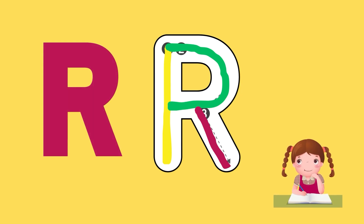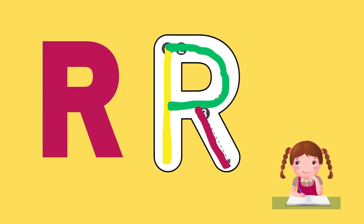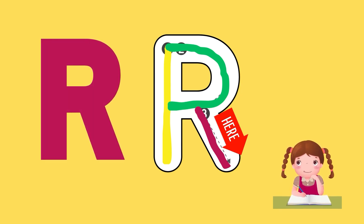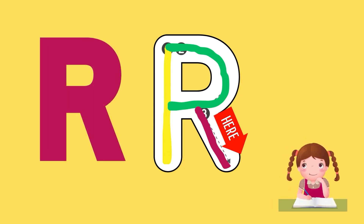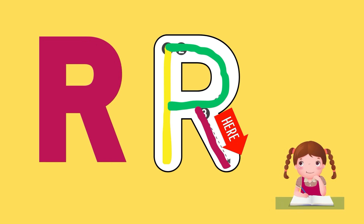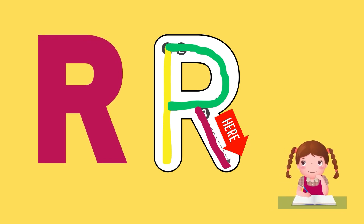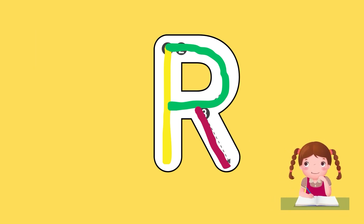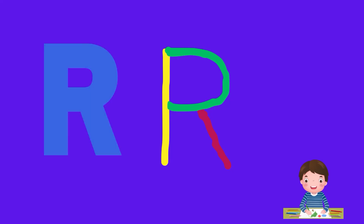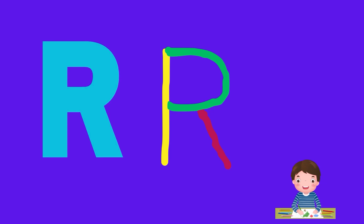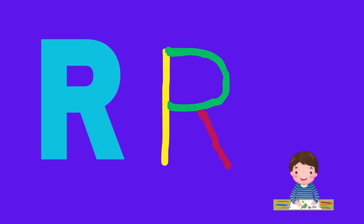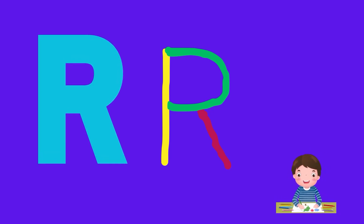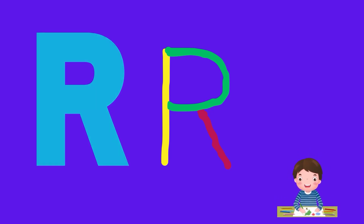Now it is time for step number three: start from point three and draw a line downwards. You have completed step number three. Congratulations, dear kids! Now you have completed the alphabet R.